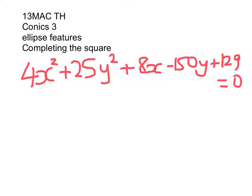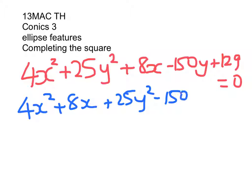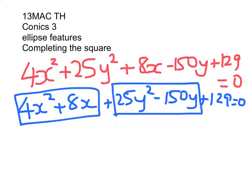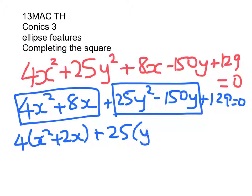First thing I do is reorder the terms: 4x² + 8x + 25y² - 150y + 129 = 0. I'll put a little box around what I'm going to complete the square on. So that's 4(x² + 2x) + 25(y² - 6y) + 129 = 0.